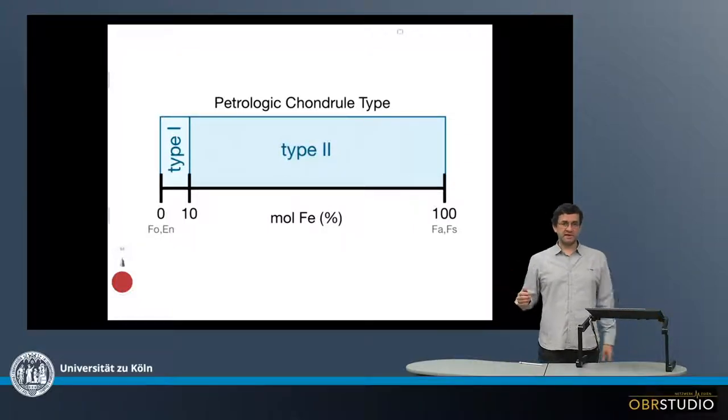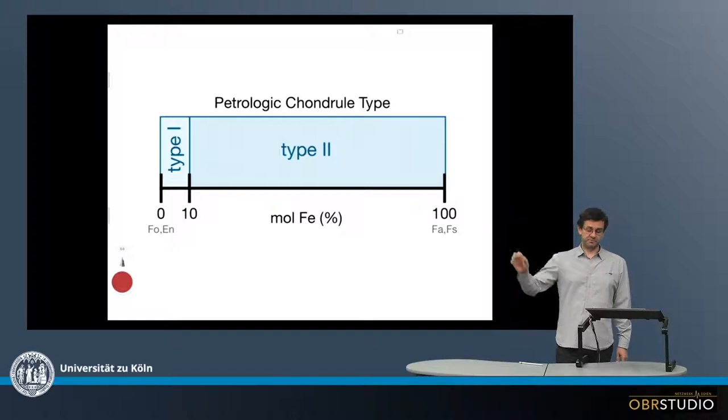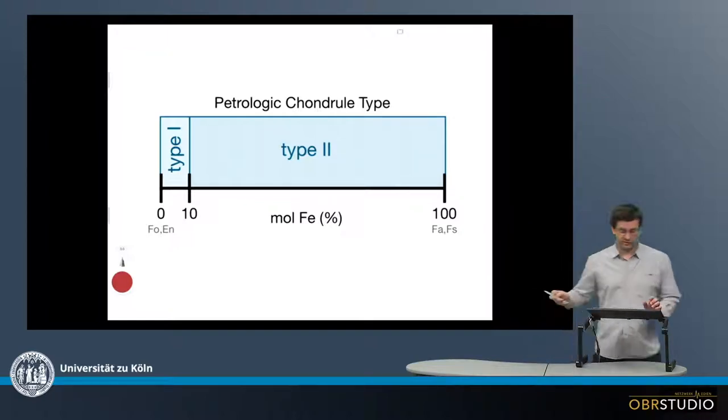Chondrules are also classified into a petrologic type, and there's a type 1 and a type 2. This classification works as follows.